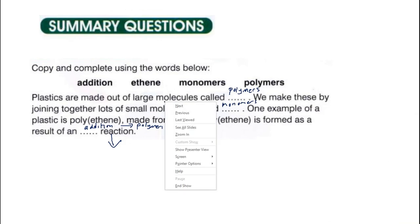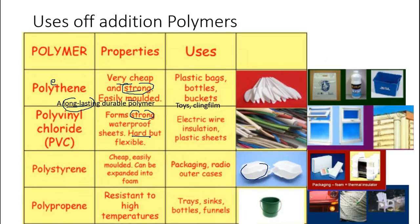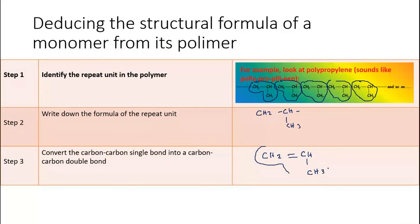To explain the polymerization reaction: we break down the double bond in the propene monomer, the propene monomers join together with other propene monomers to become the long-chain polymer, and the condition required is high temperature and pressure. That concludes this lesson — see you next time.